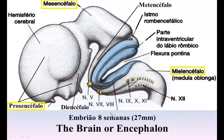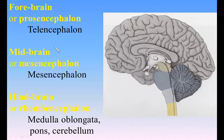The brain is contained within the cranium and constitutes the upper, greatly expanded part of the central nervous system. In its early embryonic condition, it consists of three hollow vesicles termed the hindbrain, or rhombencephalon; the midbrain, or mesencephalon; and the forebrain, or prosencephalon. The parts derived from each of these can be recognized in the adult.